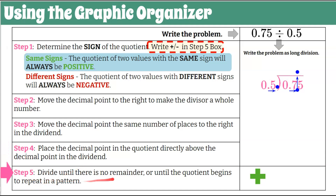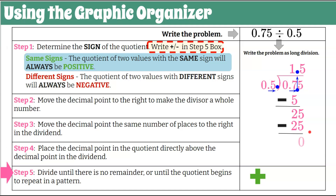Step five: divide until there is no remainder or the quotient begins to repeat. Our divisor is now 5. 5 goes into 7 once; 1 times 5 is 5. Subtract: 7 minus 5 is 2. Bring down the next digit, 5. 5 goes into 25 five times; 5 times 5 is 25. Subtract and we get a remainder of zero. So our quotient is 1.5 — one and five tenths — and we have our reminder that it was positive.